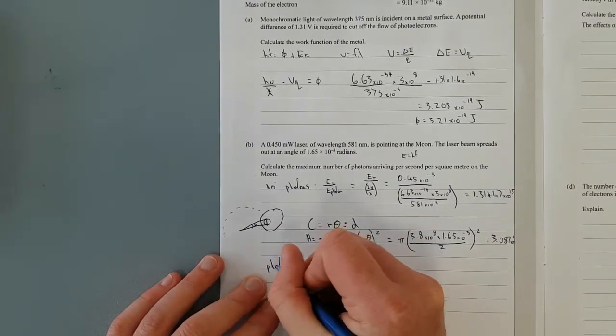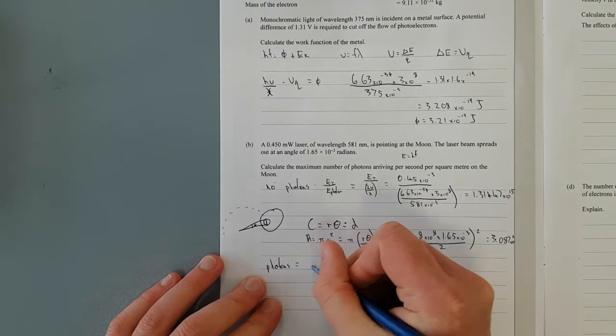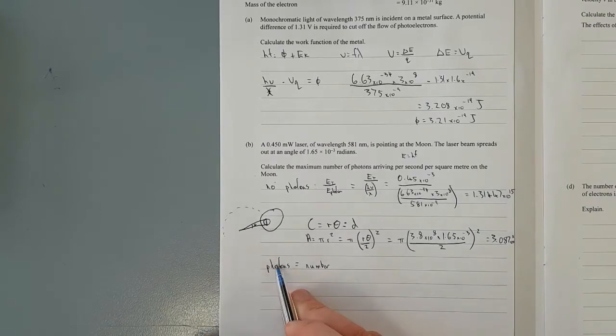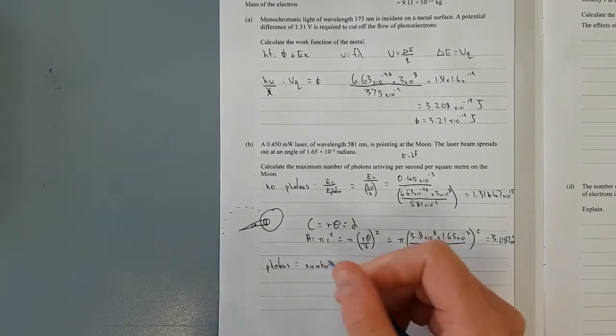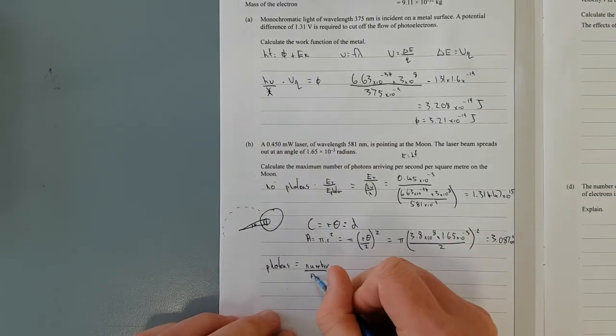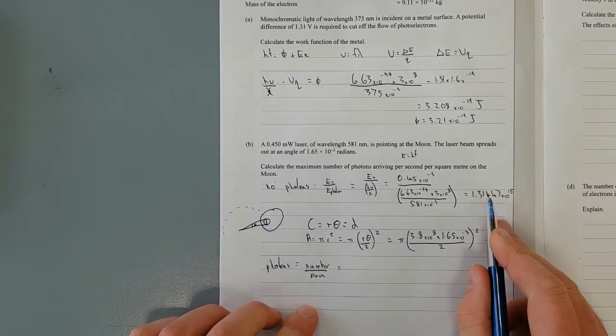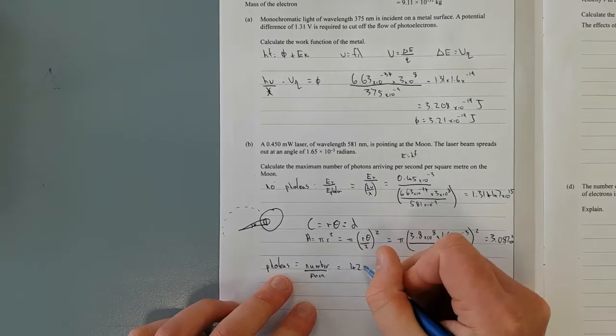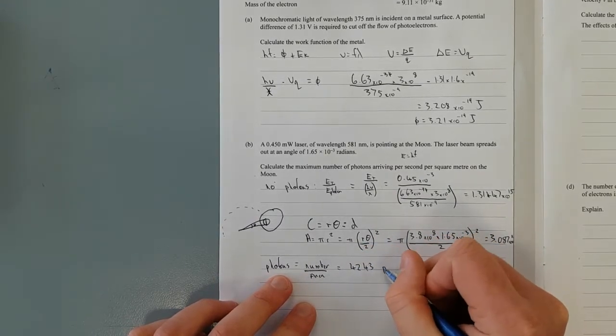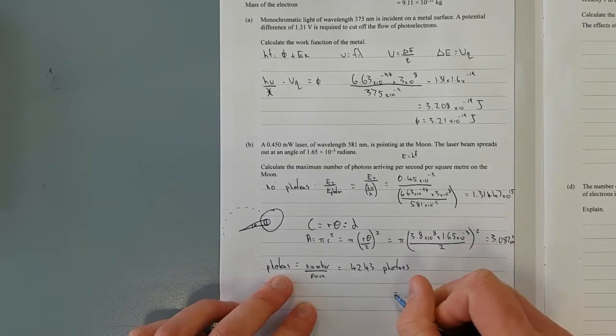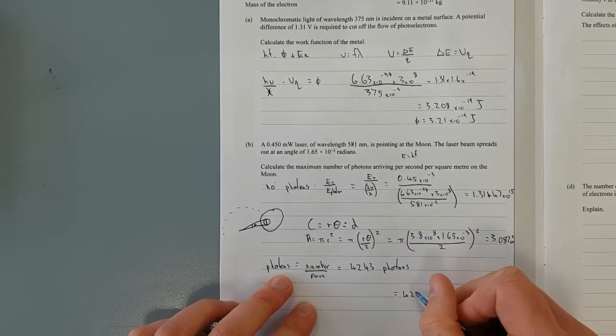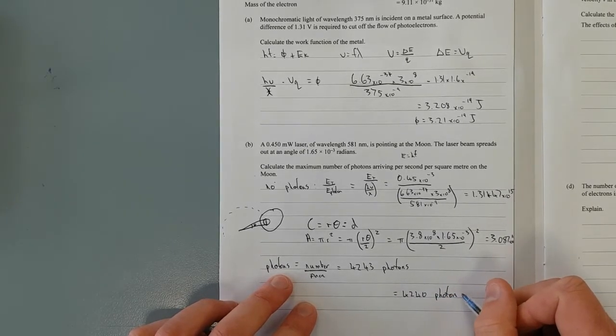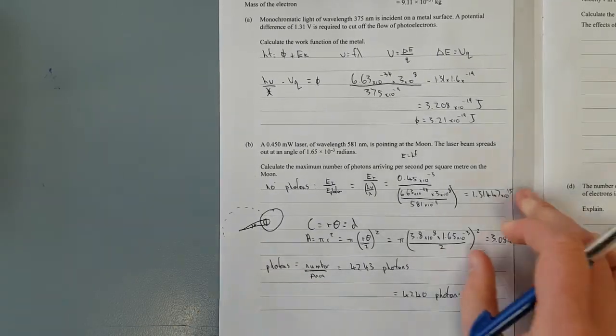Photons equals the number divided by the area. This is per square meter, so divided by square meter, which is area. That'll give you per square meter, so it's just going to give you that number divided by that number, which will give you 4,243 photons, which equals 4,240 photons. This is a bit different from the answers, it's just because of my rounding.